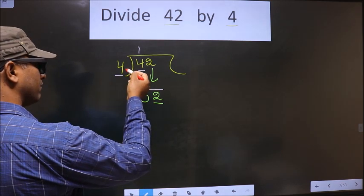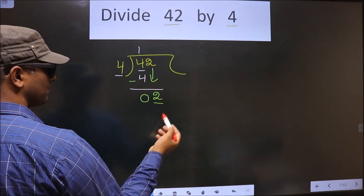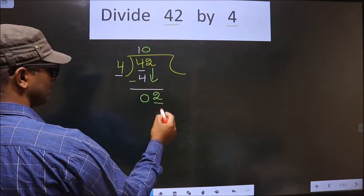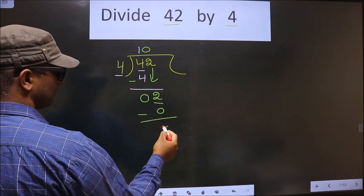If I multiply by 1, I get 4, that is larger than this. So we should multiply by 0. So 4 into 0 is 0. Now you subtract, you get 2.